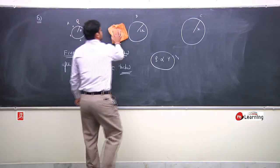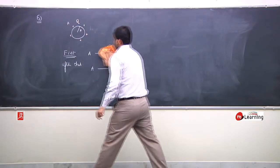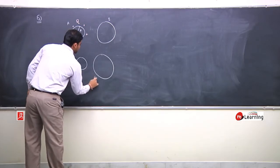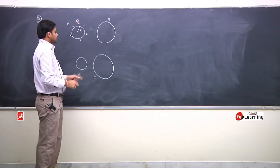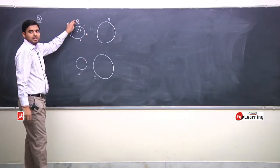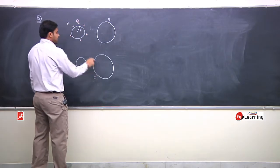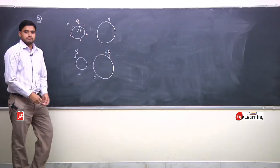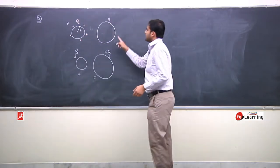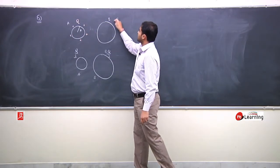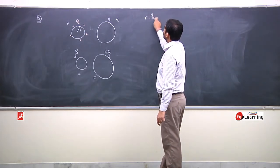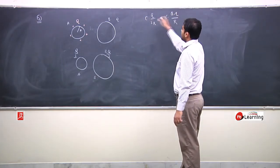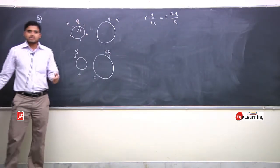Pehle A aur B ko touch kiya hai, to charge ke sharing hogi. Final charge is proportional to radius. To iski radius double hai, to ispe double charge hona chahiye. Total charge Q hai, to iske 3 hisse karo. 2 hisse iske paas hona chahiye, aur ek hissa iske paas. Matlab finally ispe charge hoga Q by 3, aur ispe 2Q by 3. Ya rule bhi kar sakte hai. Isko small q charge diya, iska potential ho jayega KQ by R. Aur iska potential kya bachega? KQ minus q by 2R. Barabar karo, yehi mil jayega. Yahi si baat yaad rakho - charge is proportional to radius.